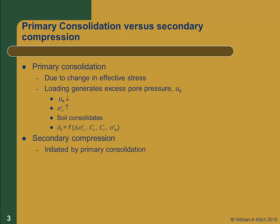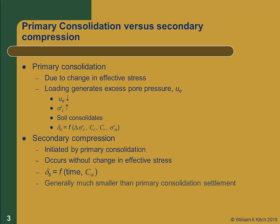Secondary compression is initiated by the disruption of the soil caused during primary consolidation, but it occurs without any change in effective stress, in contrast to primary consolidation. The magnitude of secondary compression settlement, delta sub S, is a function of time and the secondary compression index, C sub alpha. It's generally much smaller than primary consolidation settlement. It's a type of creep behavior, and the fundamental mechanisms are not well understood.